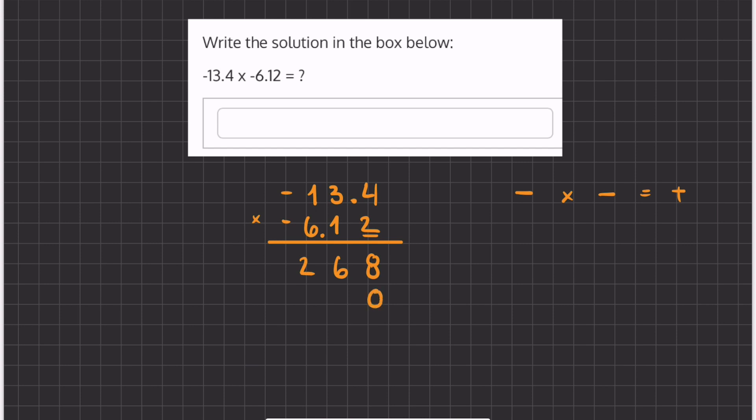Now we're going to move one column over, and we're going to place a placeholder. Now we're going to start multiplying this 1 by all the numbers above. So we have 1 times 4, which is 4, 1 times 3, which is 3, and 1 times 1, which is 1.